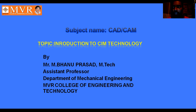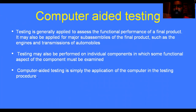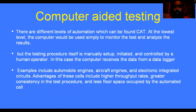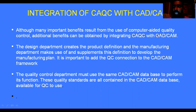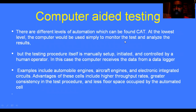The first classification is contact inspection method and the second is non-contact inspection methods. In quality control, we have two important remaining topics: the first is computer-aided testing, and the second is the integration of CAQC with CAD and CAM. Today's class will discuss these two topics, and we will also start unit 16 on Computer Integrated Manufacturing.